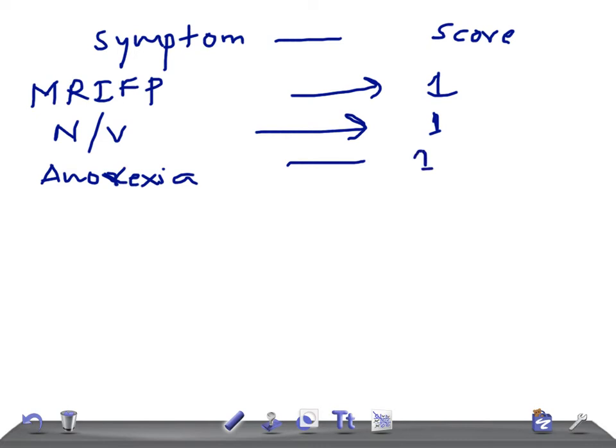Now then, we have tenderness in the right iliac fossa. Tenderness in the right iliac fossa, then the score is 2. And this is a very important sign.